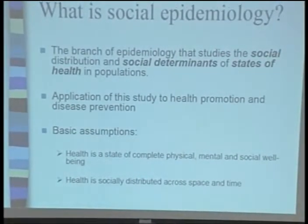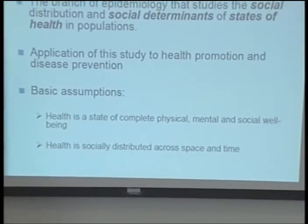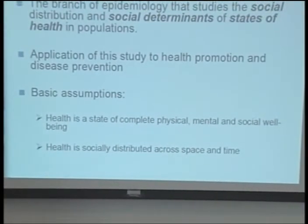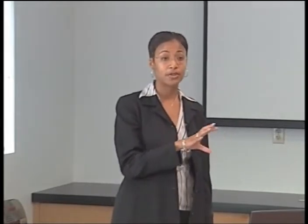Social epidemiology has two basic underlying assumptions. First, health is a state of complete physical, mental, and social well-being — so it's not simply the absence of disease and disability, not just mortality, but also various morbidities that affect quality of life. Second, health is socially distributed across both space and time, meaning there are health and illness distribution patterns based on social factors, including social risk groups, geography, and time elements.